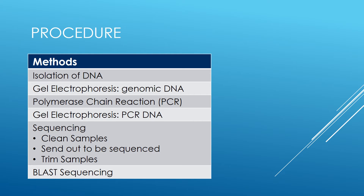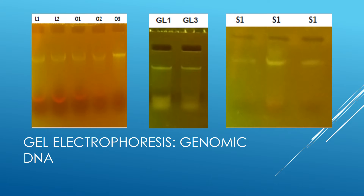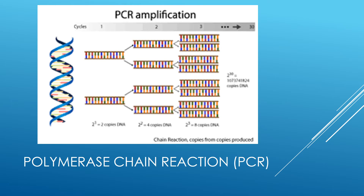The procedure for this experiment included multiple separate steps. I began my experiment by first isolating the DNA of each sample. Once the DNA was isolated, it was run on a gel electrophoresis in order to check that DNA had been successfully extracted. If the isolation of DNA was successful, a bright band would be visible. As you can see in these pictures of the gels, all samples had DNA successfully extracted. The DNA was then prepared to run through a polymerase chain reaction, or PCR, to amplify the target sequence of DNA.